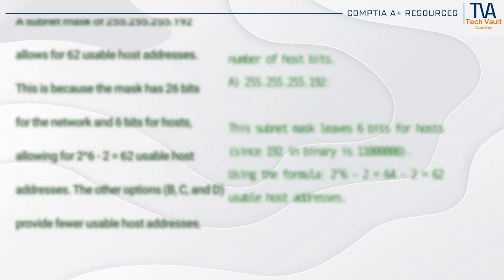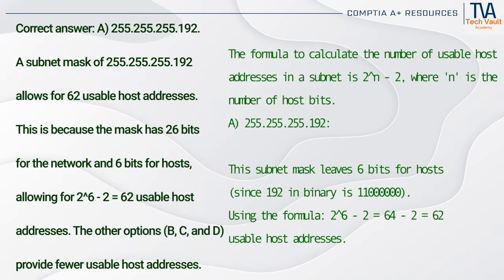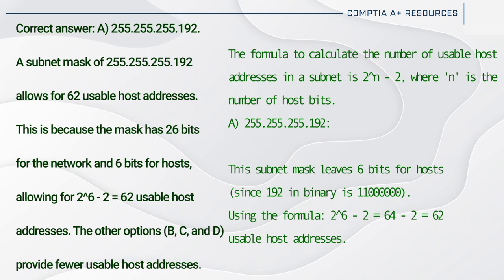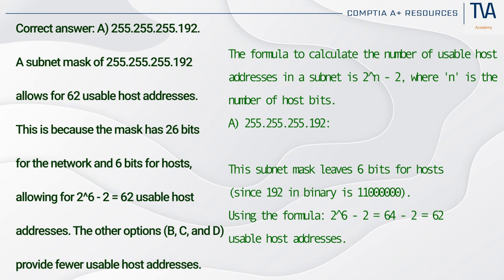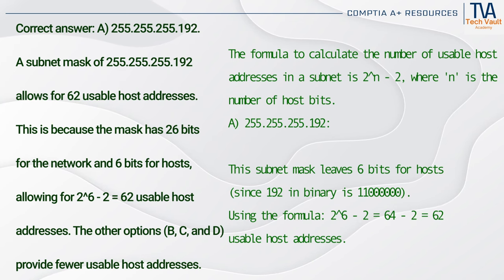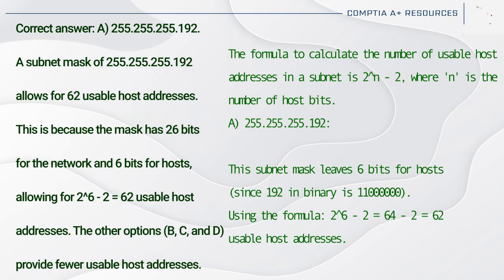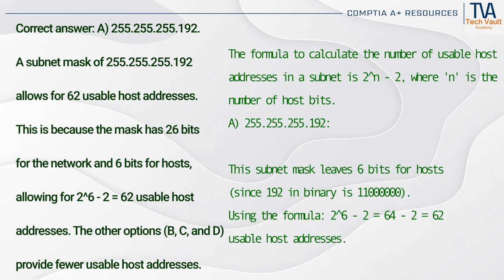Correct answer: A. 255.255.255.192. A subnet mask of 255.255.255.192 allows for 62 usable host addresses. This is because the mask has 26 bits for the network and 6 bits for hosts, allowing for 2^6 - 2 = 62 usable host addresses. The other options, B, C, and D, provide fewer usable host addresses.